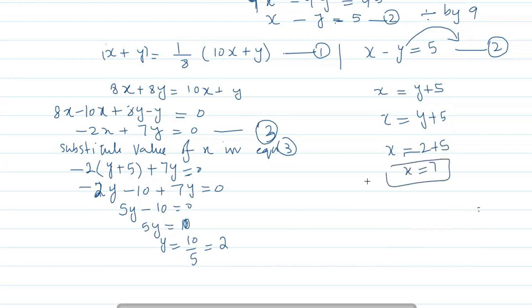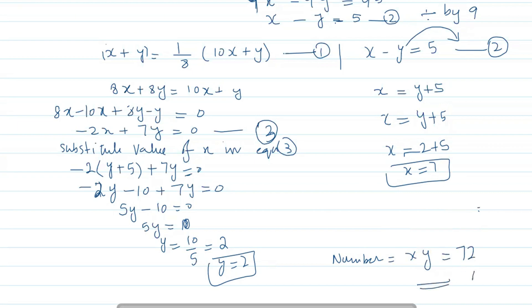Since y = 2, then x = y + 5 = 2 + 5 = 7. So x = 7 and y = 2, meaning the original two-digit number is 72. That is our answer.